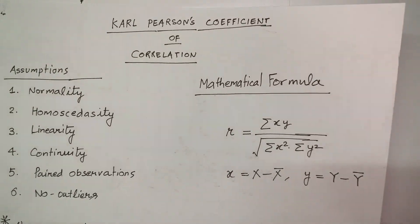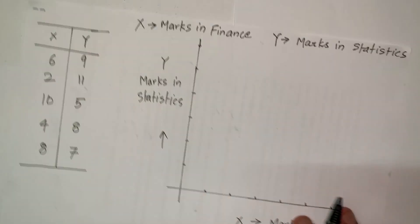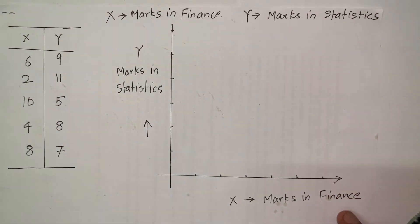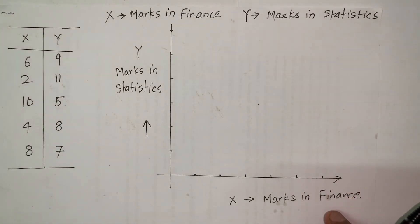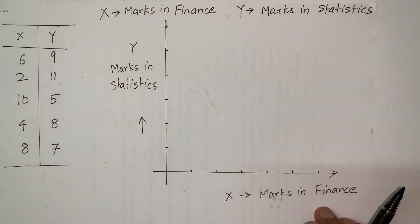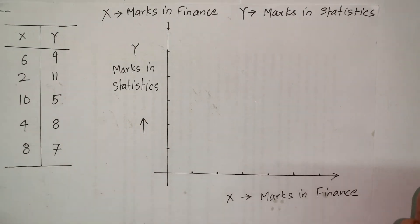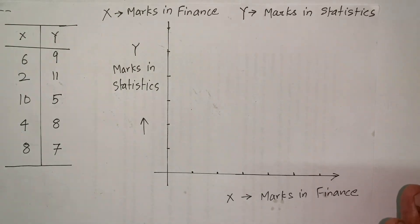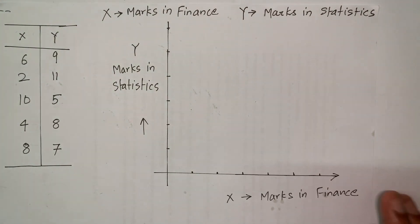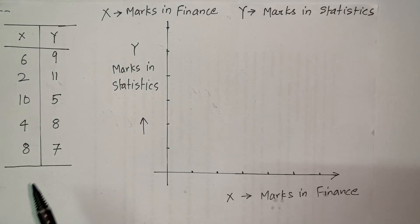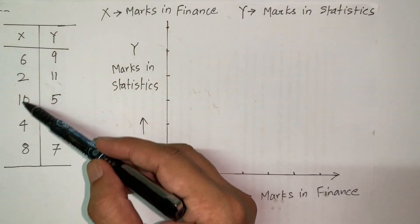Let's solve an example. I have two variables: capital X — marks in finance — and capital Y — marks in statistics. I'm assuming that anybody who does well in finance, which involves a lot of calculation of ratios and technicalities, must also do well in stats. So capital Y is considered a dependent variable on X.